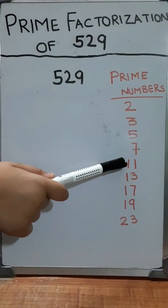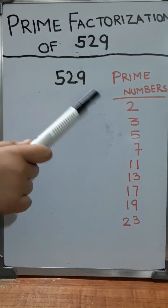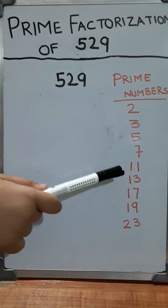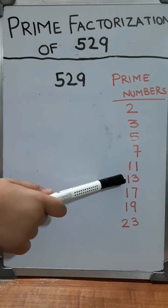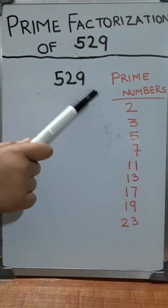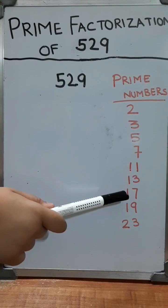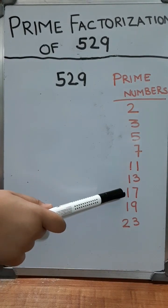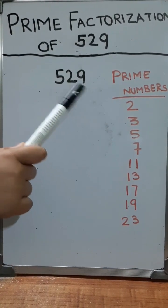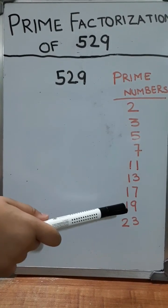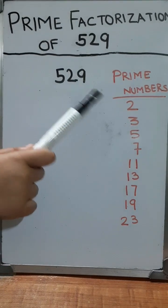The next prime is 11. 11 does not divide 529. Next prime number is 13. 13 also does not divide this number. Next is 17. 17 does not divide it. 19 also does not divide 529.